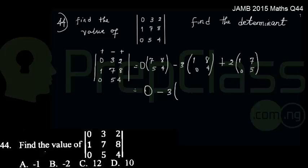I'll have 0 minus 3. Taking the determinant of this 2 by 2 matrix, the diagonal elements will be multiplied to each other. So I'll have 1 times 4 minus 0 times 8, plus 2 into bracket, 1 times 5 minus 0 times 7, close brackets.